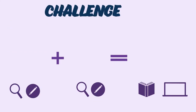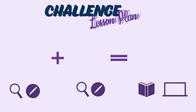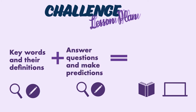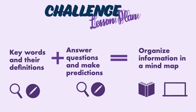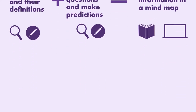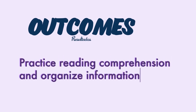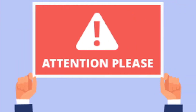Let's take a look at how the challenge is organized with a lesson plan. First, we are going to learn what keywords are and how to define them. Then we are going to learn how to answer questions and make predictions. With this, we are going to be able to organize information in a mind map. The outcome of this challenge is that you practice reading comprehension and organize information.